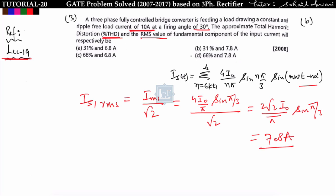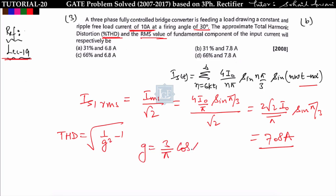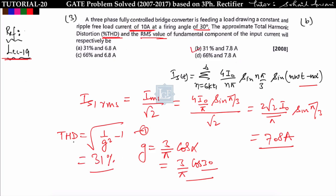So it is either option B or option D. Now to find THD: the formula is THD equals root of (1 upon g squared minus 1). To find g for a three-phase rectifier, g equals 3 upon pi into cos alpha. With alpha equal to 30 degrees, g equals 3 upon pi into cos 30 degrees. Putting the value of g into the formula, we get THD equal to 31 percent. So option B is correct. All these formulas were derived in lecture 19 — go through that lecture to understand the derivation.